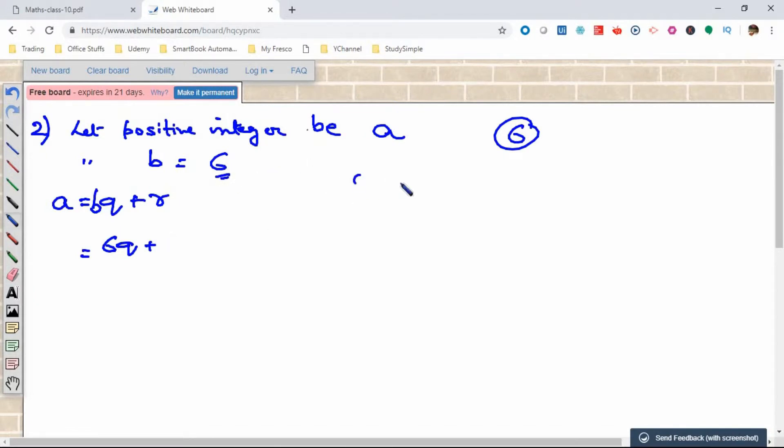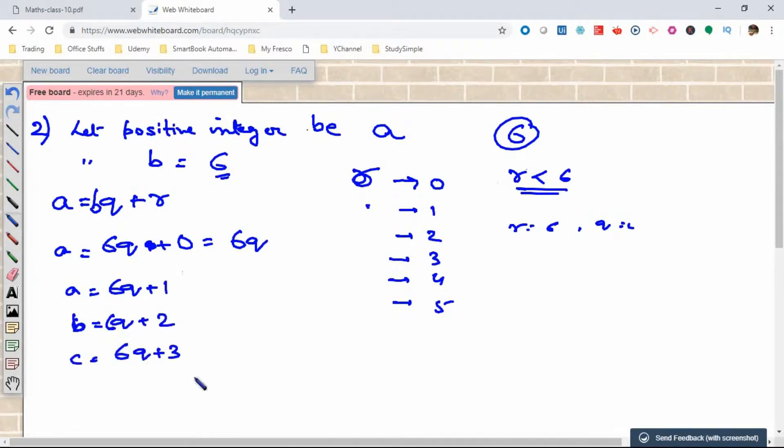If b equals 6q, it means r can be 0, r can be 1, r can be 2, 3, 4, 5. The value of r should be less than 6 and greater than or equal to 0. So a becomes either 6q, 6q+1, 6q+2, 6q+3, 6q+4, or 6q+5.